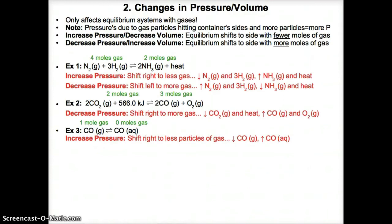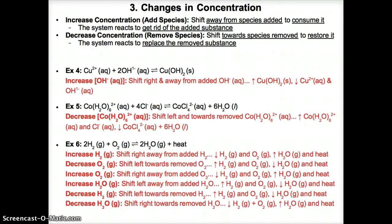Adding a species or increasing its concentration means there's too much of that species compared to equilibrium. So equilibrium shifts away from that species to consume it like a reactant and bring its concentration down. Removing a species or decreasing its concentration means there's too little, so equilibrium shifts towards that species to produce it like a product and bring its concentration back up.